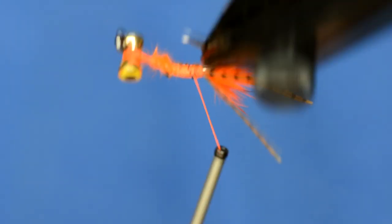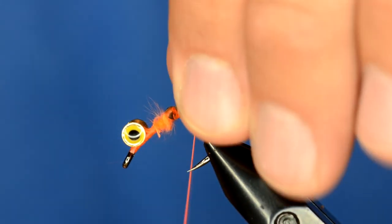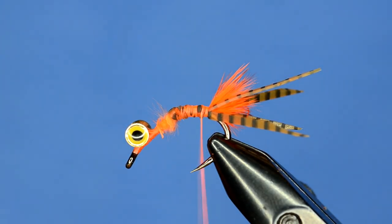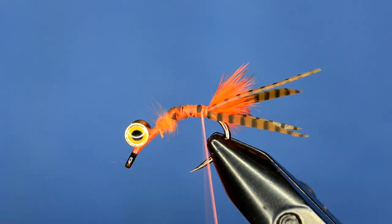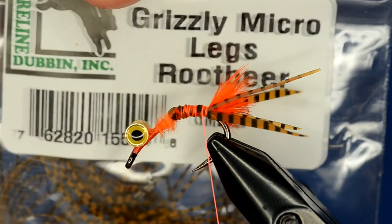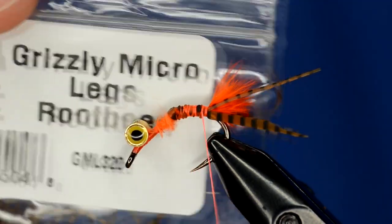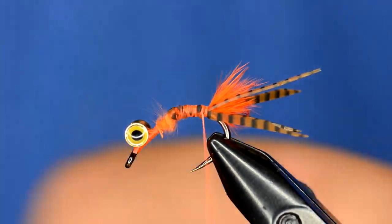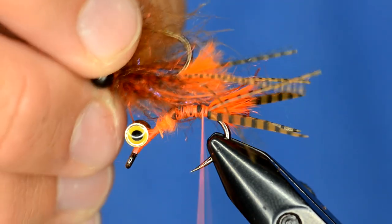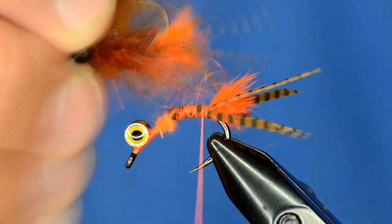So that's just going to kind of give it a little bit different motion in the water. You don't have to do that step. In fact you can use the micro grizzly legs as well, and as you can see on this one that I did, I did the micro legs on it. It looks really good as well.